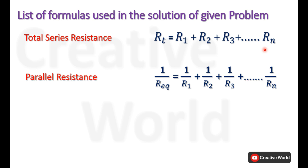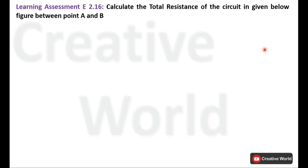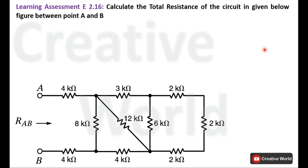From R1 to Rn are the number of resistances connected in parallel. Now, moving towards the problem: Learning Assessment E2.16 — calculate the total resistance of the circuit in the given figure between points A and B. This is the circuit diagram and we have to calculate the total resistance between points A and B.